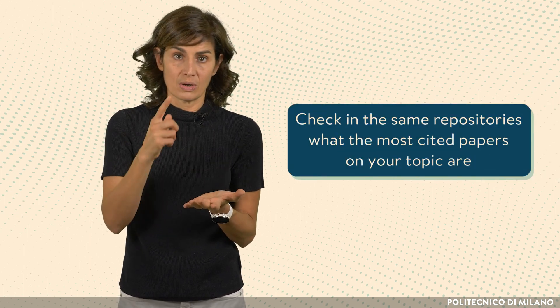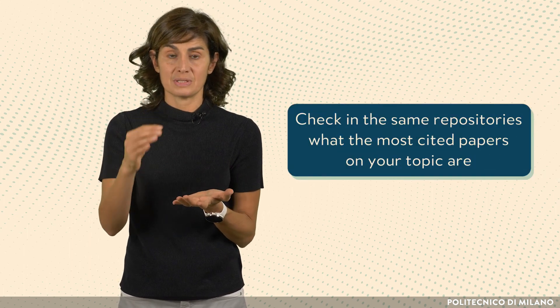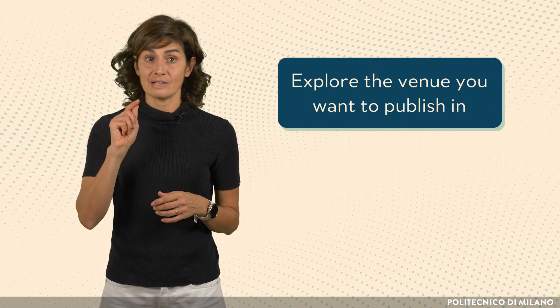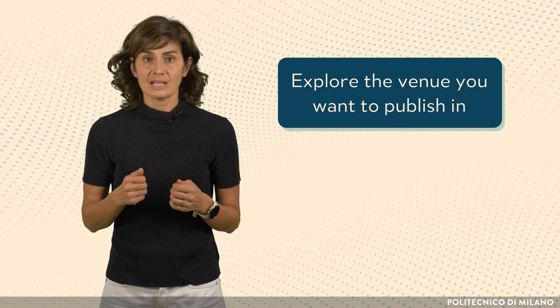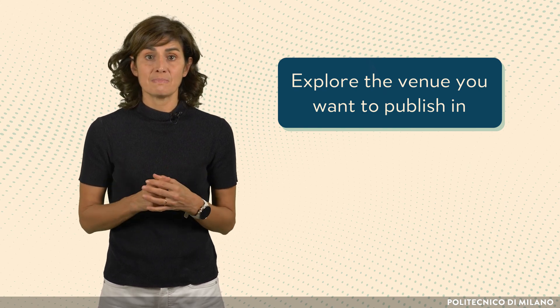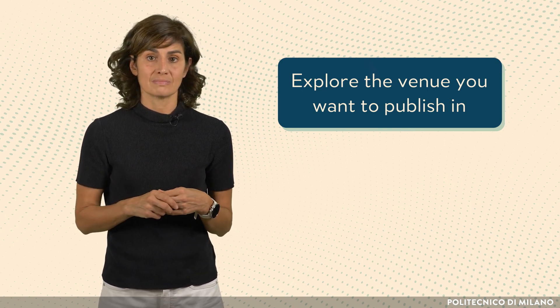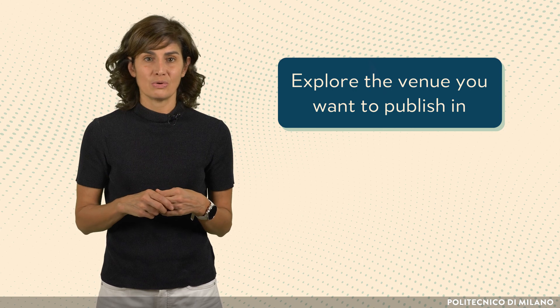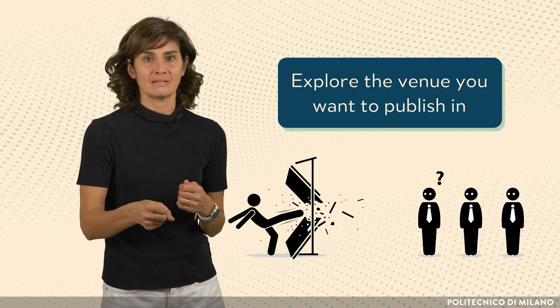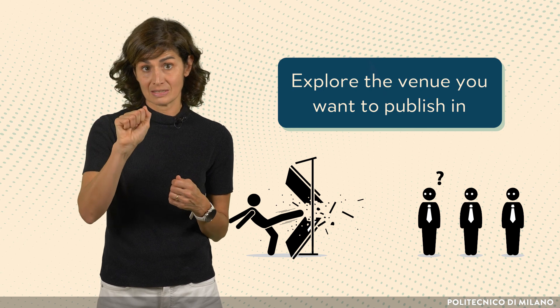This can be a good starting point. In addition, check in the same repositories what the most cited papers on your topic are. Advice number 2: when you aim at publishing at a conference or journal you are not familiar with, make sure you explore that venue thoroughly with regard to your topic. Check if anything has been published before that is close to what you are doing, by searching the proceedings of previous years. You don't want to get into a new friend's house by throwing the door down, but by gently knocking at the door. Do the same when trying to be accepted by a new community.